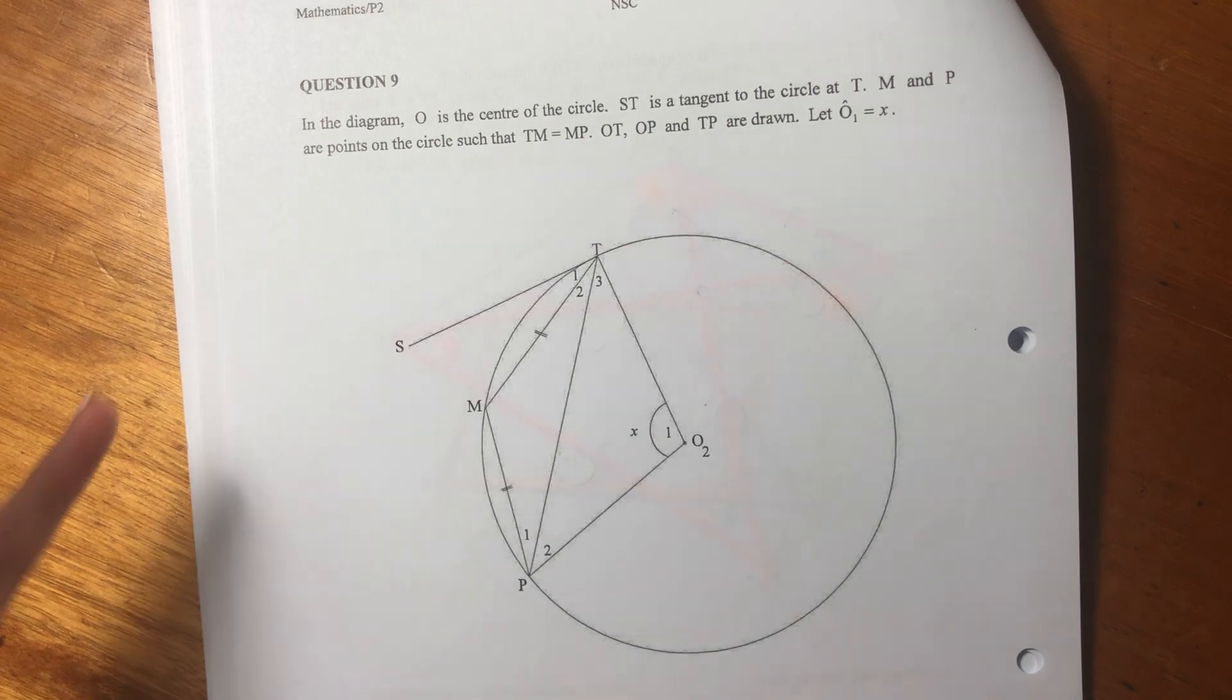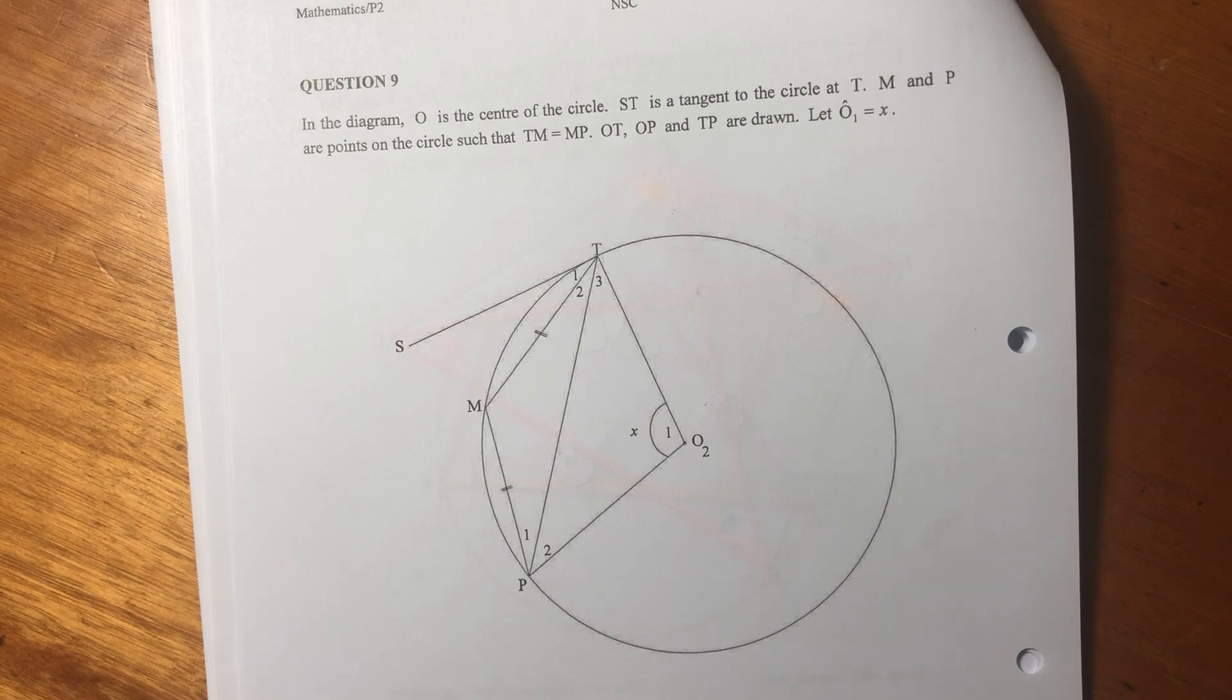Here we've given a circle and we've given a bunch of lines. Let's see what they've told us about this shape. In the diagram, O is the center of the circle. Important, because it means that any line from the center to the circumference is a radius.